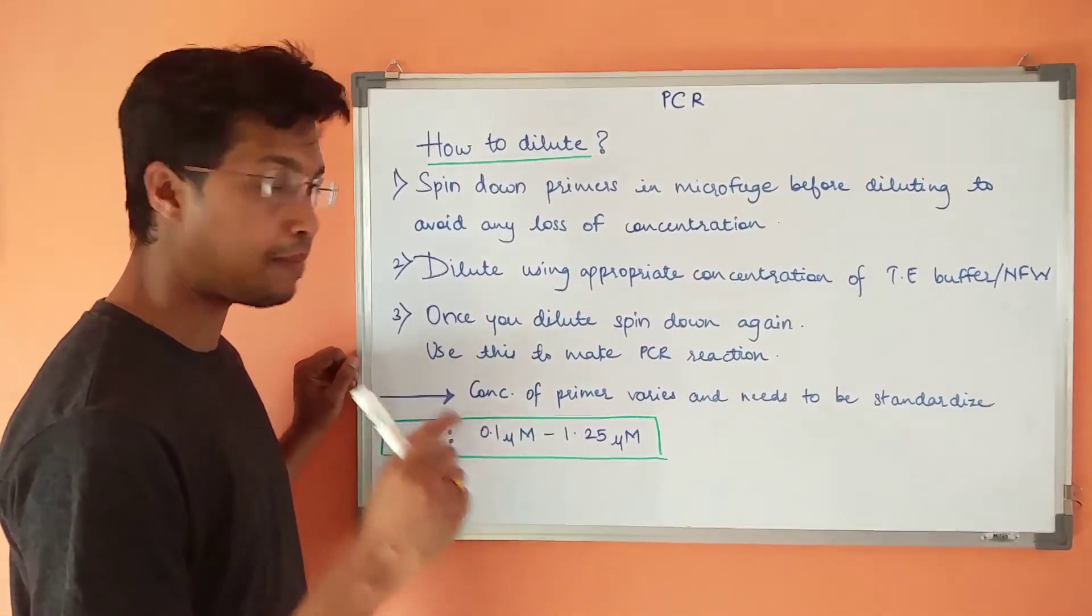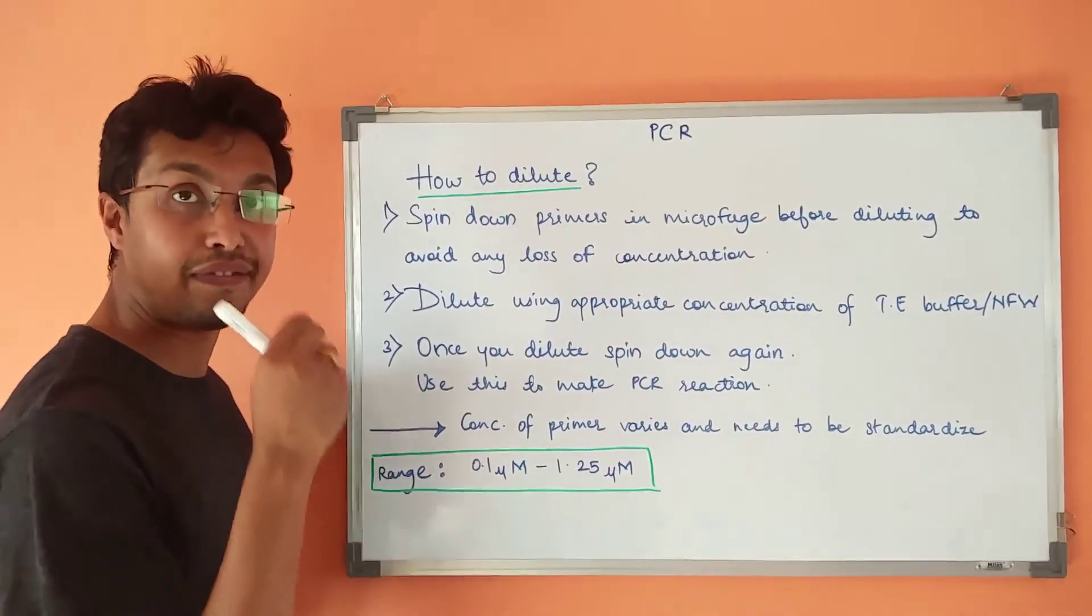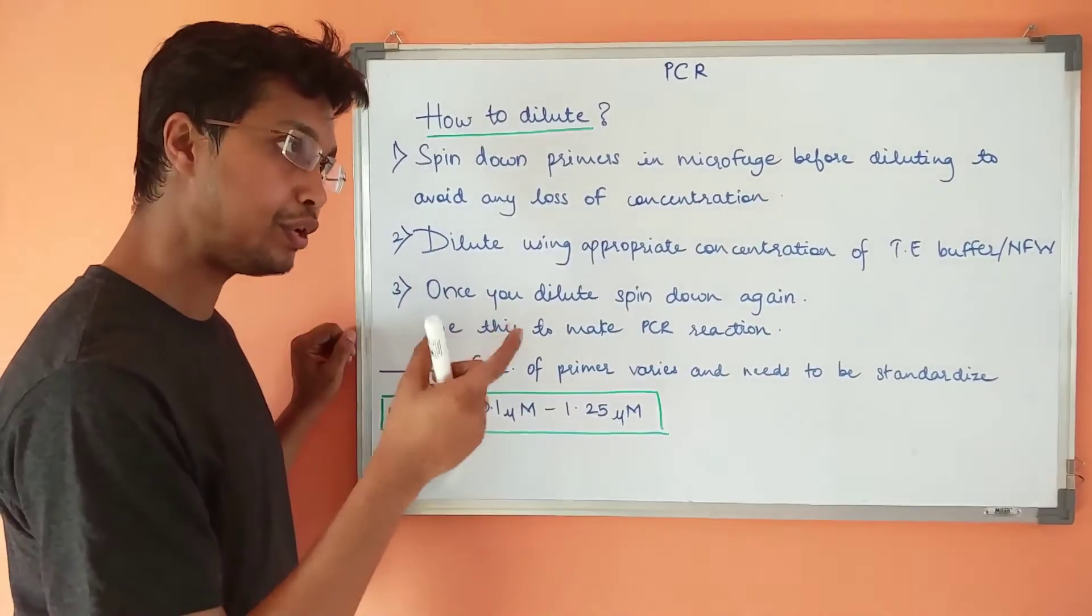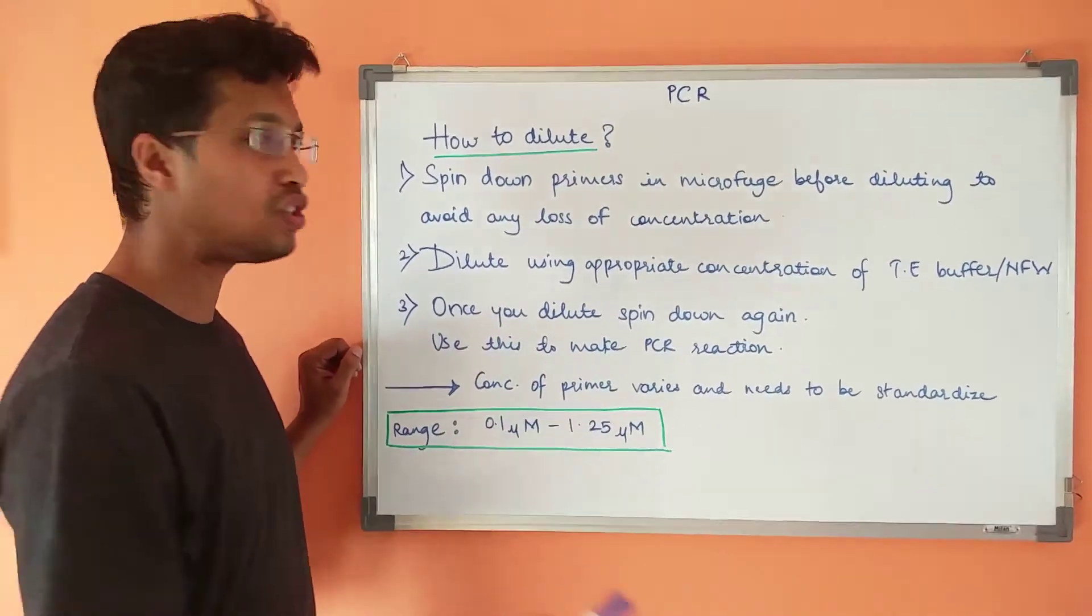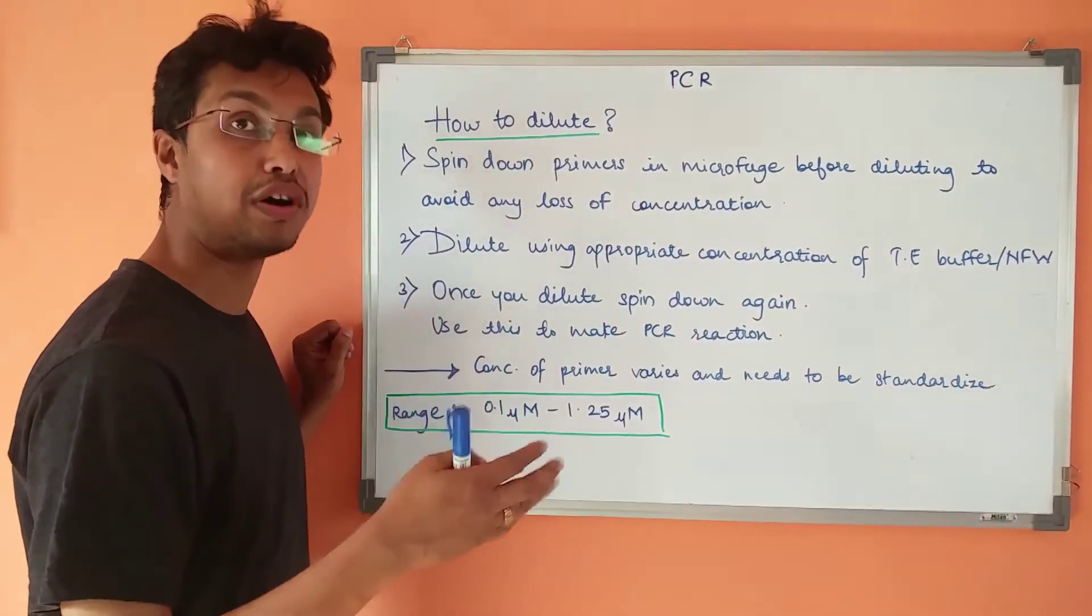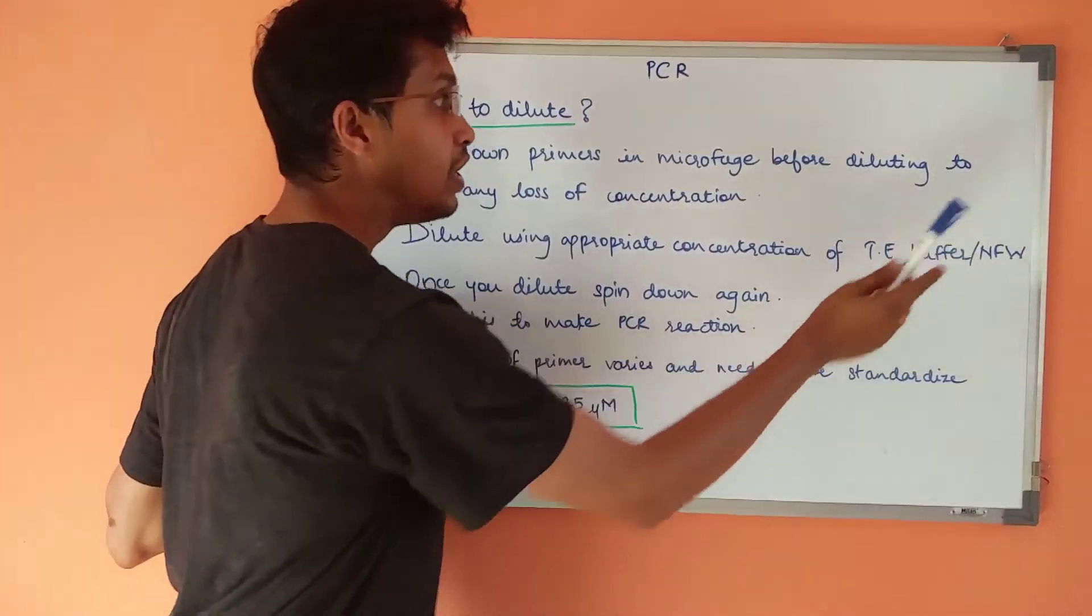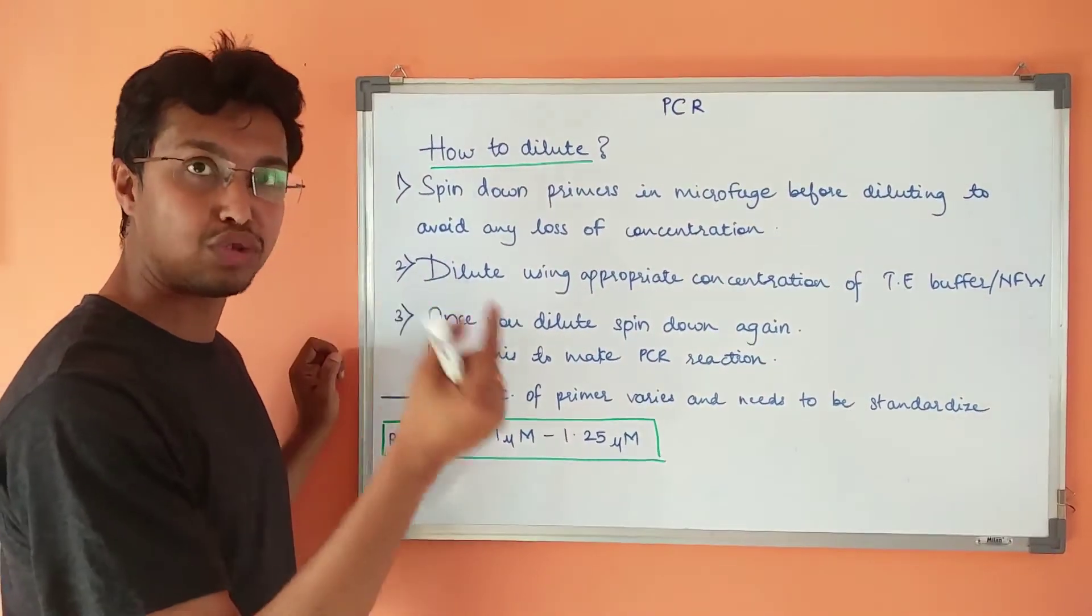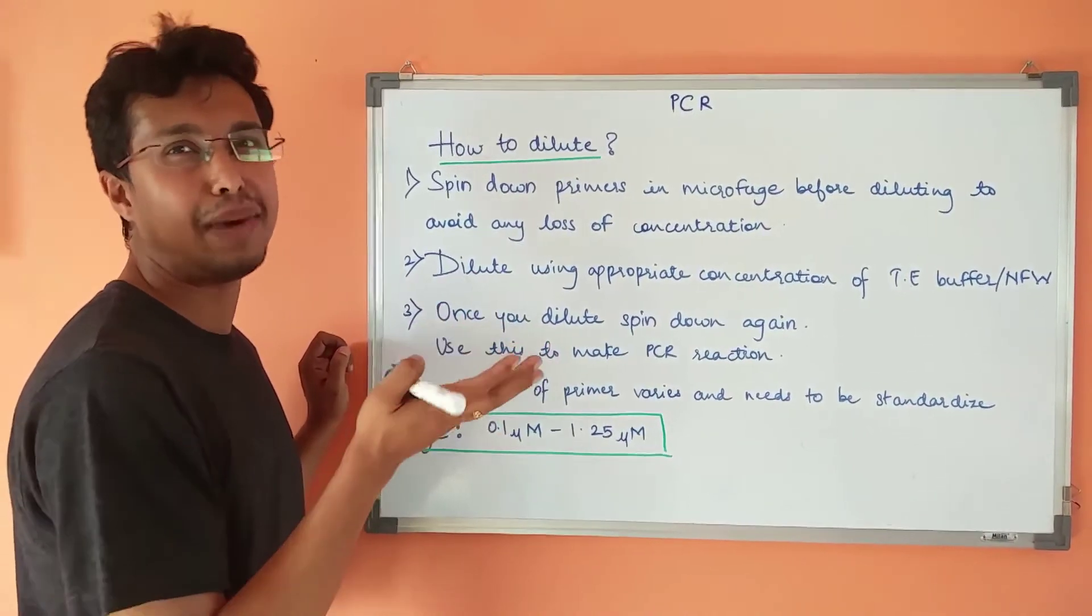First of all, whenever you get a PCR primer, spin down the primers in a microfuge before diluting it, so that if any primer particle is attached to the cap of that eppendorf or tube, it will get settled down when you centrifuge it. After that, you can dilute it using appropriate concentration of TE buffer or nuclease-free water. If you want to use those primers for a long run, say a year or more than that, you can dilute it using TE buffer. Otherwise you can dilute it using nuclease-free water. Always store your primers in aliquots at minus 20 degree Celsius or around minus 15 degree Celsius.